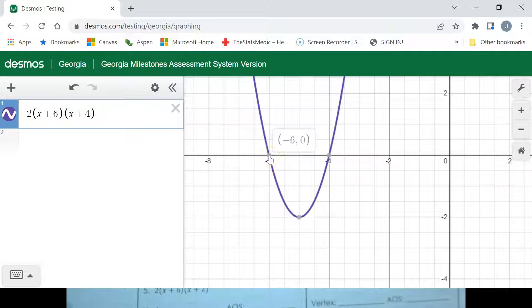This is what we're saying. There's our x-intercept at negative 6, 0. There's our intercept at negative 4, 0.